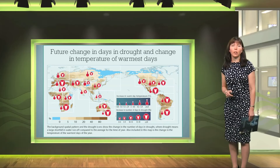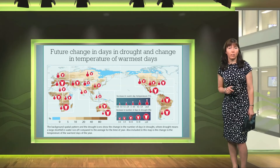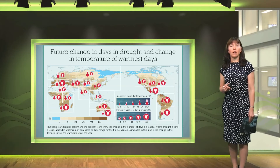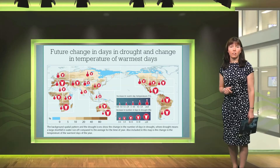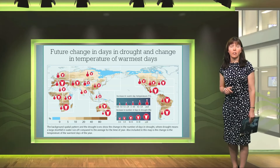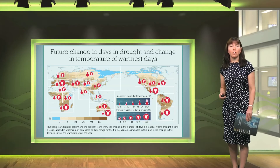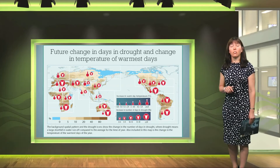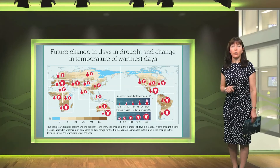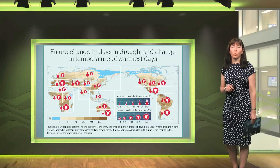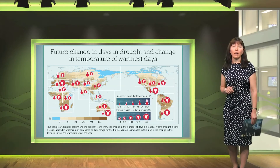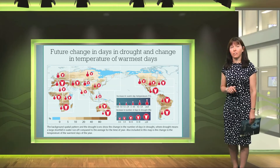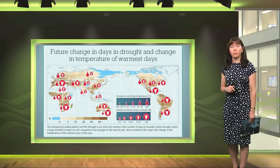In the top right hand corner we can see the change in droughts and the change in temperature on the warmest days of the year. The projections show increases in the numbers of days in drought globally and increases in the temperature of the warmest day of the year, indicating more frequent and severe heat waves.